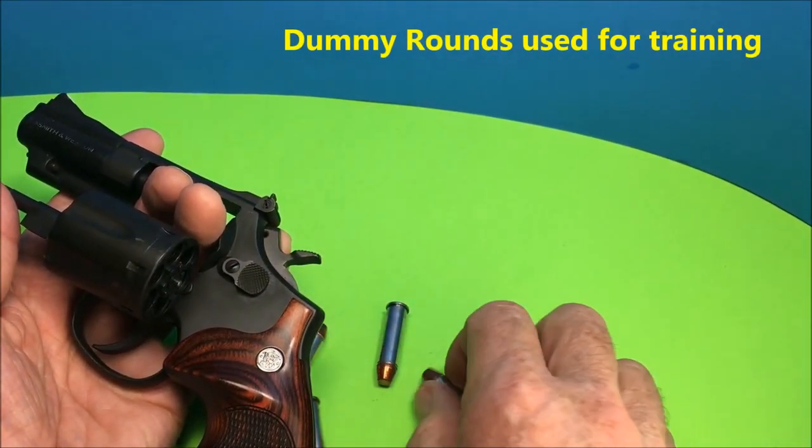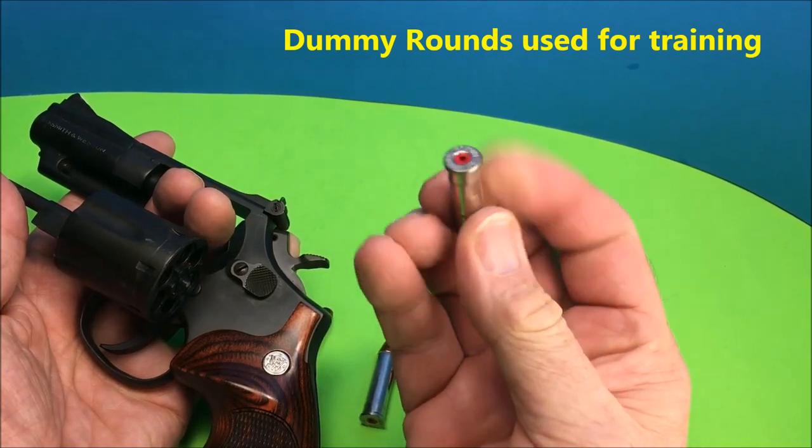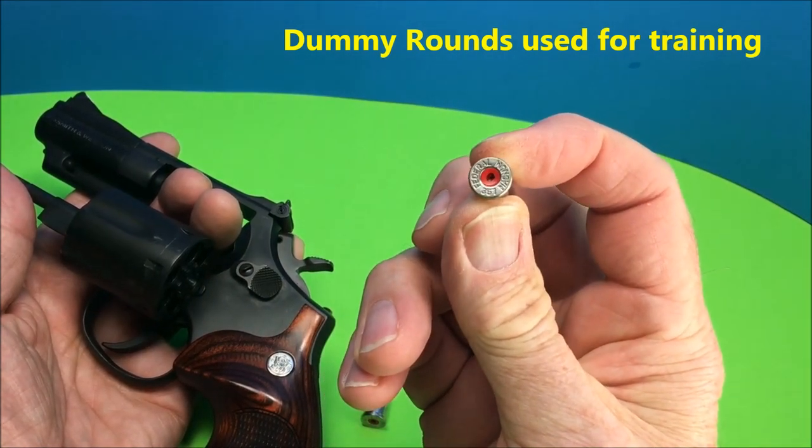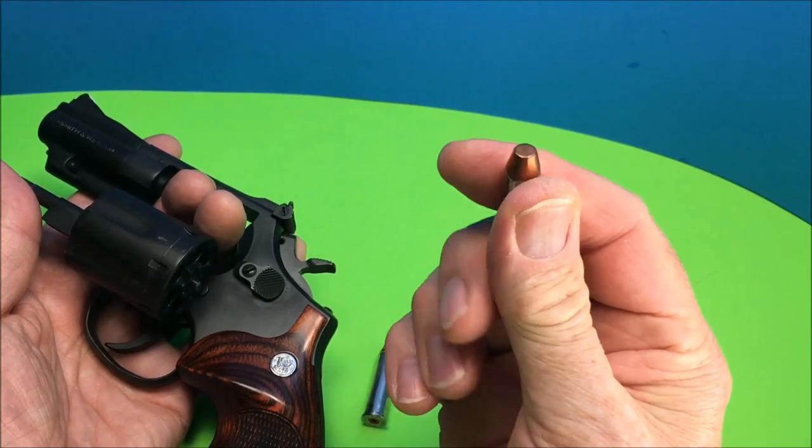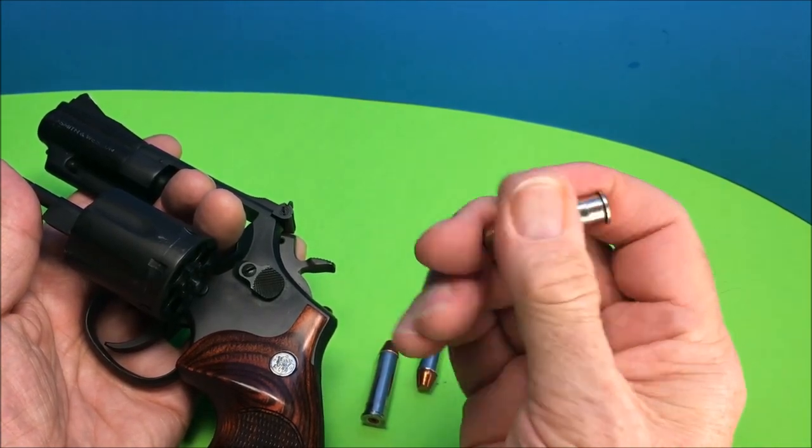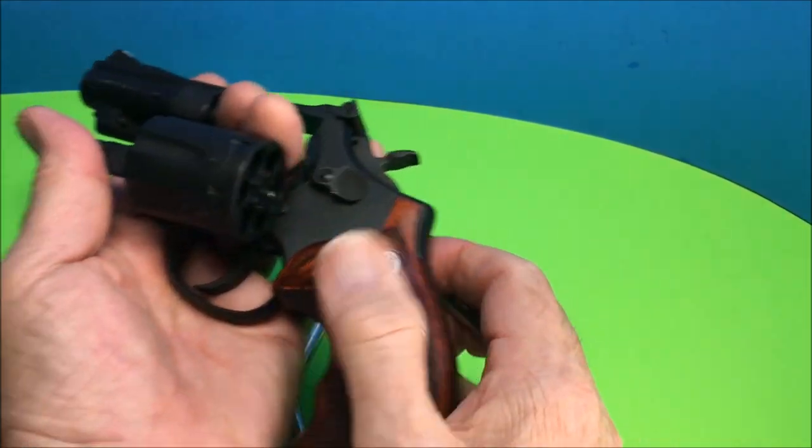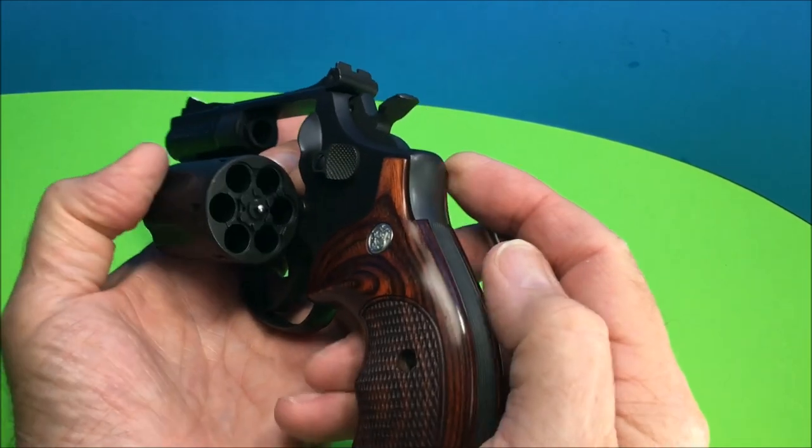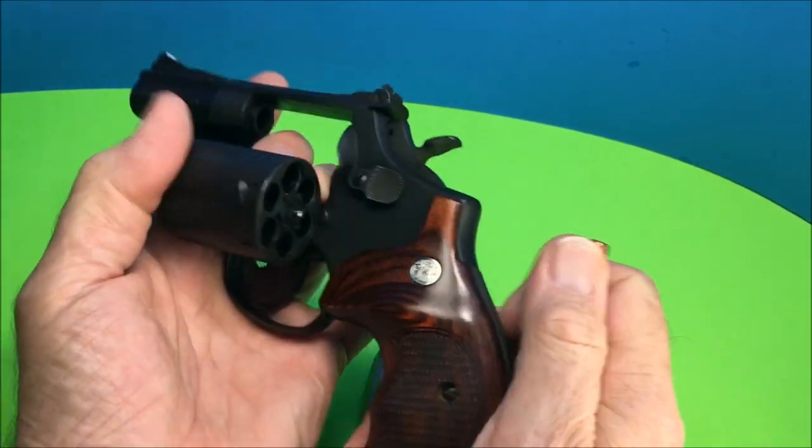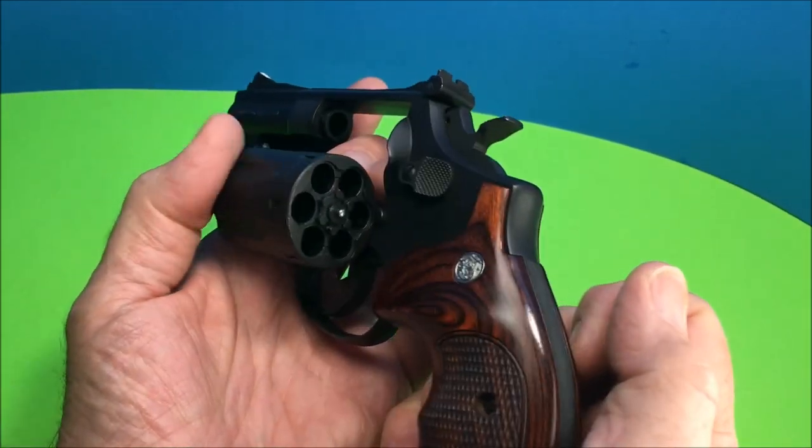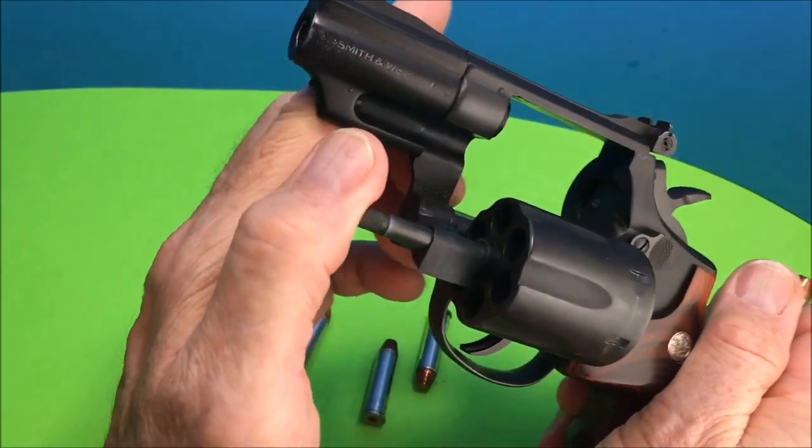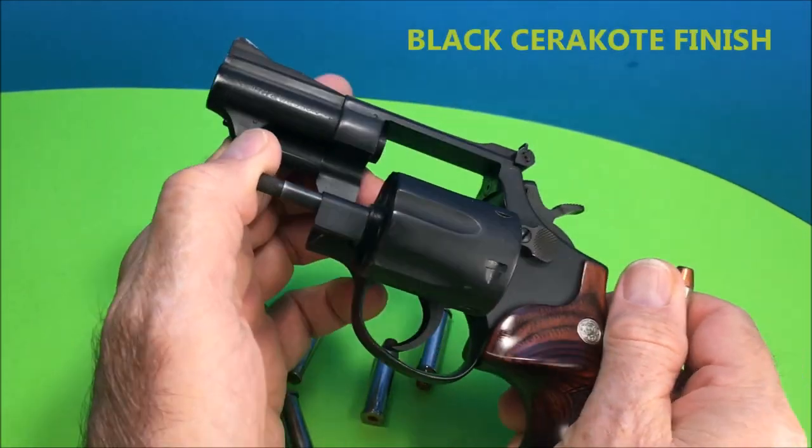These are dummy rounds, but they look like the real McCoy and they are great to train with. I think it's a great idea to train with dummy rounds, that way you can get the feel of the weight. It's a Model 19-3 that's been Cerakoted.